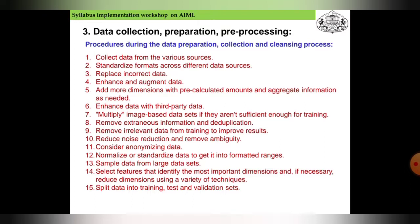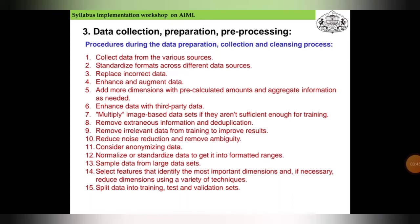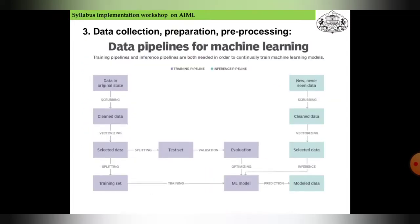Further steps include: reduce noise and remove ambiguity; consider anonymizing data; normalize or standardize data to get it into formatted ranges; sample data from large datasets; select features that identify the most important dimensions; use dimensionality reduction techniques; and split data into training and test sets. These are the standard procedures to collect, prepare, and clean the data.